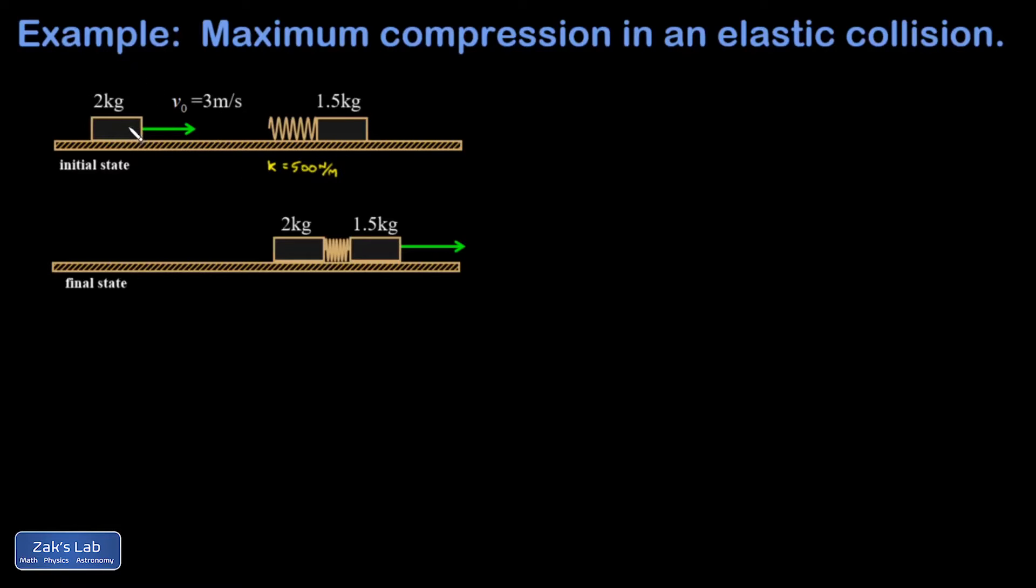So we have to imagine what's happening when the collision begins. The 2-kilogram cart will be moving faster than the 1.5 and squishing the spring as a result. And then at some point, the 1.5-kilogram mass starts to bounce off, which means it's now moving faster than the 2-kilogram mass. So what's right in between those two? The 2-kilogram approaching the 1.5 and then the 1.5 running away from the 2-kilogram, there's a special moment where they're actually moving at exactly the same speed.